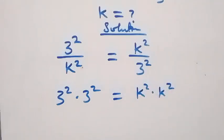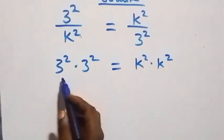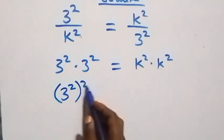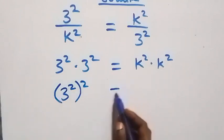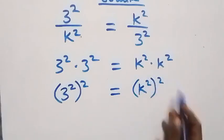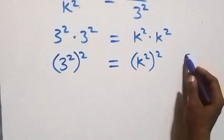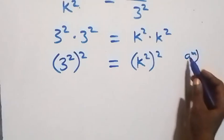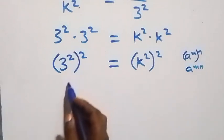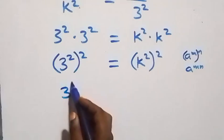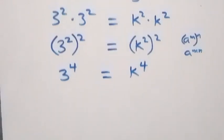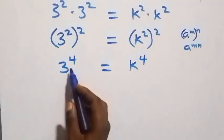From here we can write this as three squared, squared — because it multiplies itself — equals k squared, also squared. From the law of indices, when we have a raised to power n, raised to power n, that is the same as a raised to power n times n, so the powers multiply. We get three raised to power 4 equals k raised to power 4.